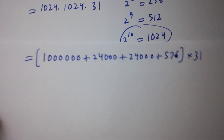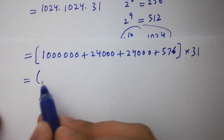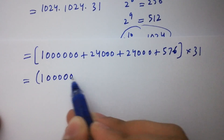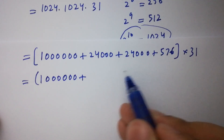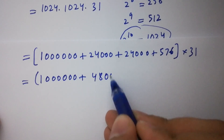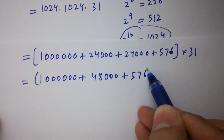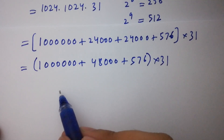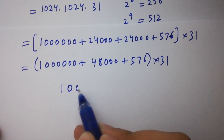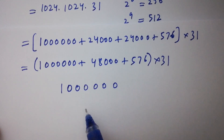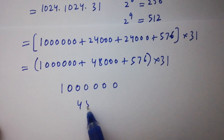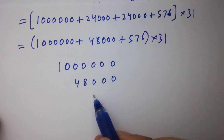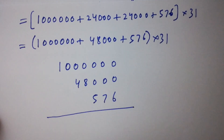Now simplify this. We have 1 followed by 6 zeros, plus 24,000 plus 24,000 gives 48,000, plus 576. So we have 1,000,000 plus 48,000 plus 576, all times 31. Adding them: we get 1,048,576, times 31.